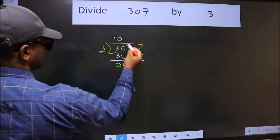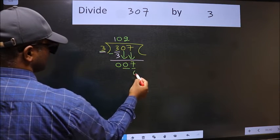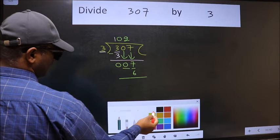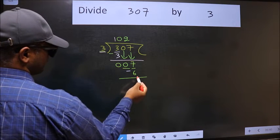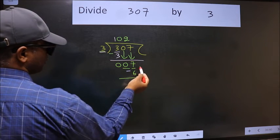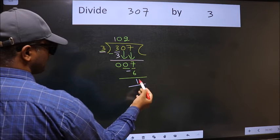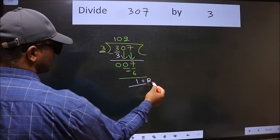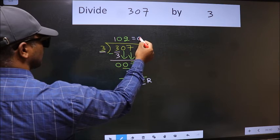A number close to 7 in 3 table is 3 times 2 equals 6. Now we should subtract. We get 1. No more numbers to bring it down. So this is where we stop. This is our remainder and this is our quotient.